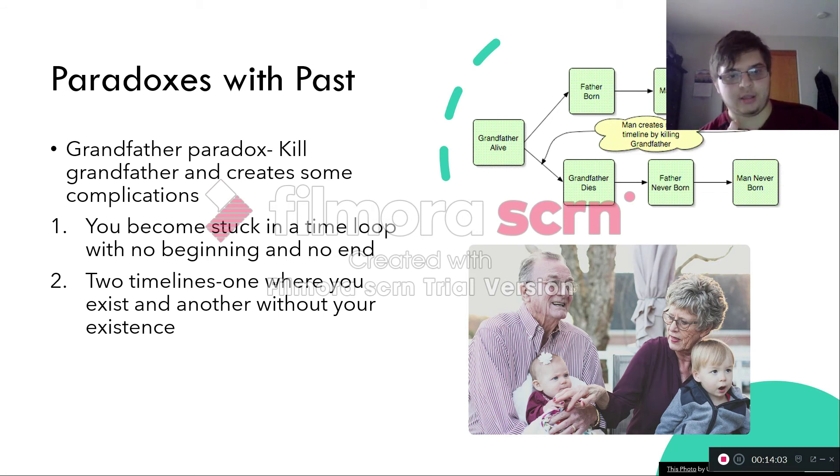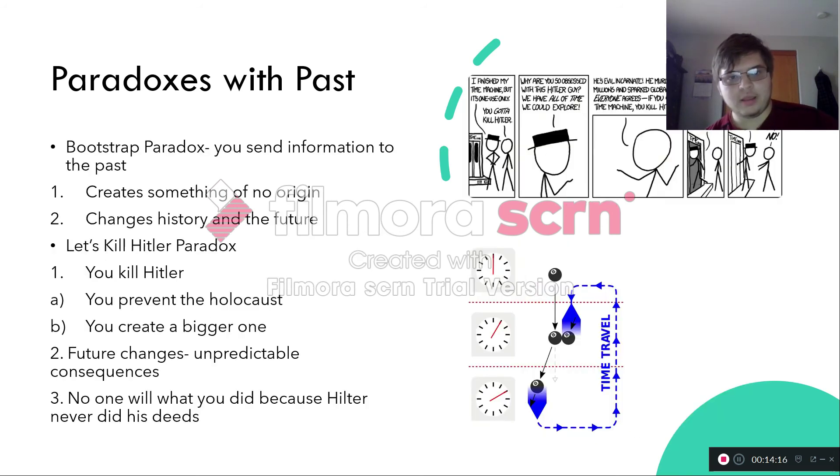Now, here's two other paradoxes. Another one is the bootstrap paradox. You send information to the past. In doing so, you create something of no origin, with no beginning and no end. And because of that information, you could change history forever and the future. Unless you got a time machine and get the information before it even reaches out.